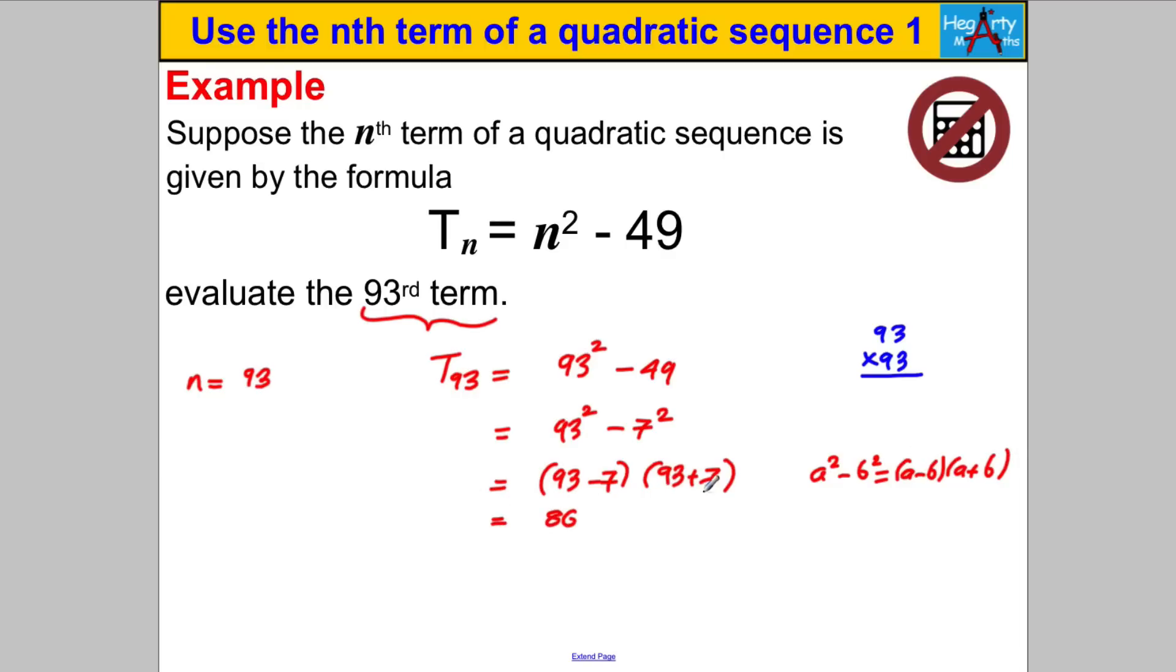Well 93 subtract 7 is easy for us to work out that's 86 and 93 add 7 is a hundred and 86 multiplied by a hundred well that's super easy that's 8600. And who would have thought we would have got the answer to that so quickly and so easily but we would have just by thinking of our difference of two squares. So it was a lovely link there to some work on quadratics anyway that's it for this video thanks loads for watching.